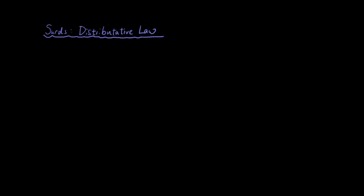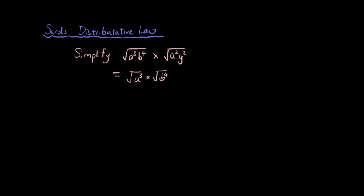I'll just bring up a problem that I've gone through before with regards to surds multiplication. So let's say the problem was: simplify the square root of a³b⁴ times the square root of a² and y². So I separate each term individually: square root of a³ times square root of b⁴, then times square root of a² and times the square root of y².